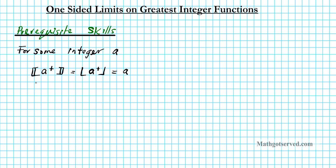Another point to note: if you're approaching the integer from the left side, the greatest integer of that — which can also be written as the floor — when you're approaching from the left side, is equal to that integer minus one. These are the two main ideas you need to keep in mind in order to compute this.